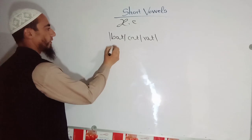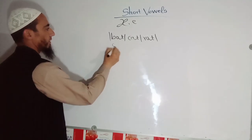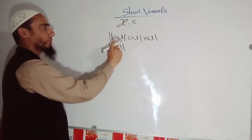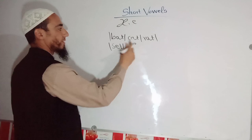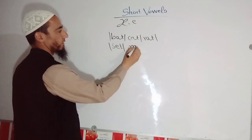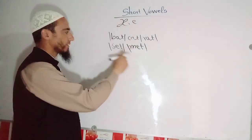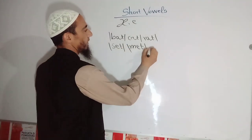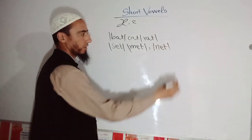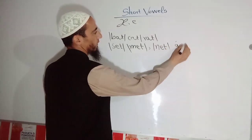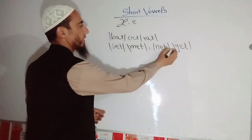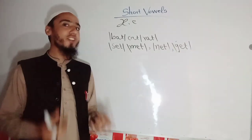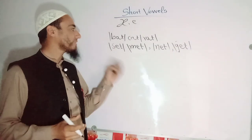Another symbol for a short vowel sound is /e/ — the 'e' sound, very short. For example: set, met, net, and get. Some students mispronounce 'get' — it is not 'geet', it is 'get'. Set, met, get — be careful about that.